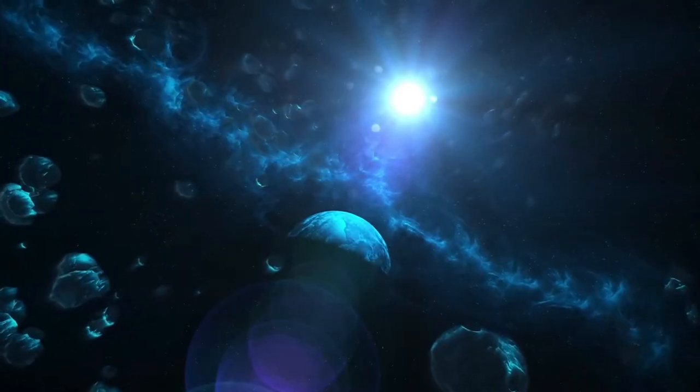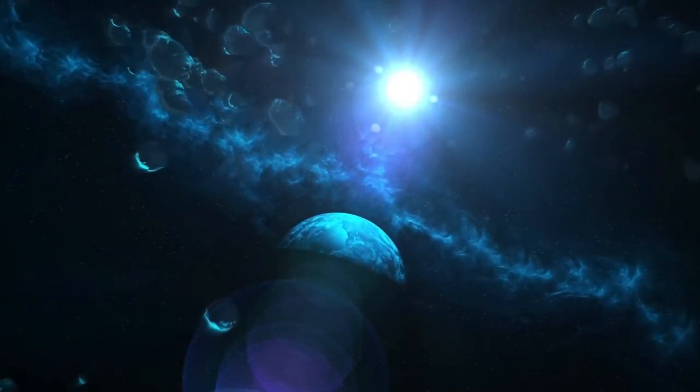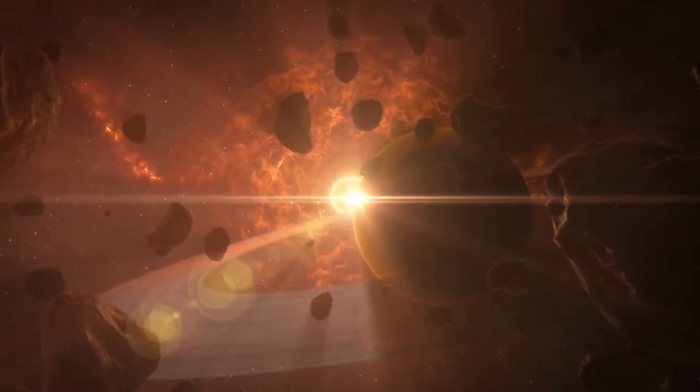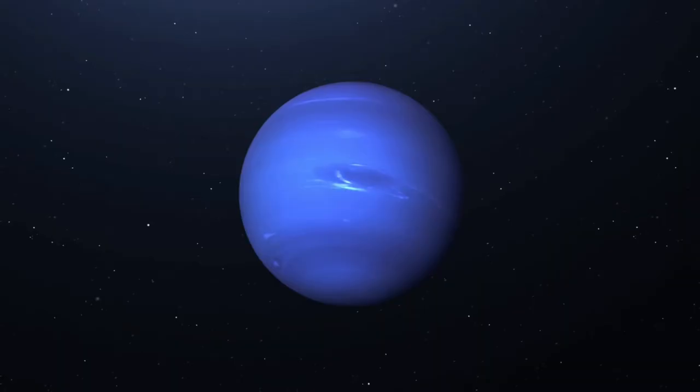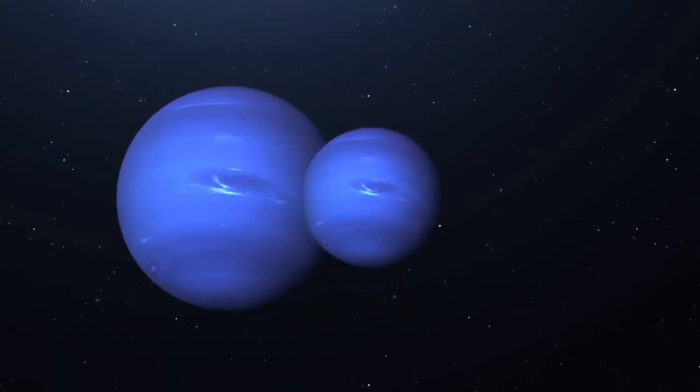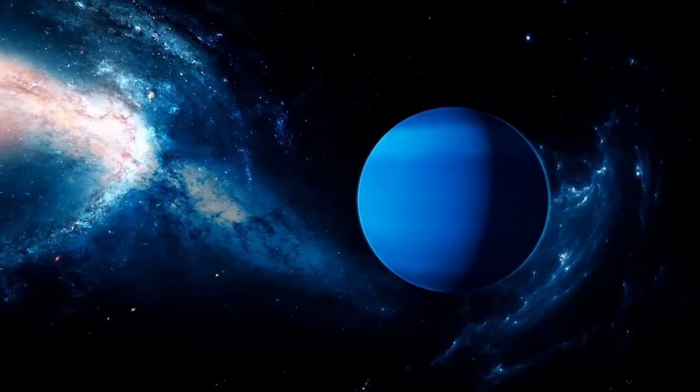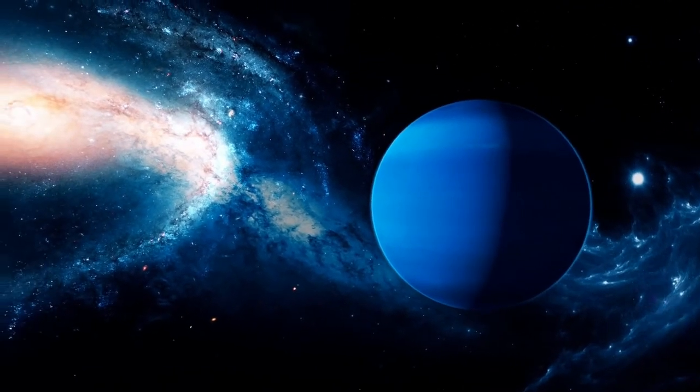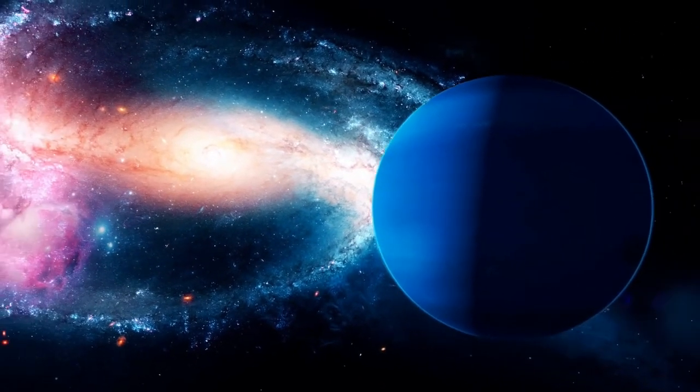Tidally locked means that only one hemisphere of the planet faces the star, and this is not ideal for life. Others are more like a smaller version of Neptune than a larger version of Earth, and planets similar to Neptune are expected to have a significant envelope of hydrogen surrounding any layer of water on the surface with a planetary core of rock and iron.